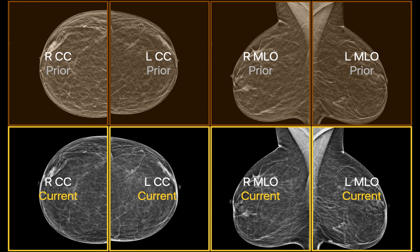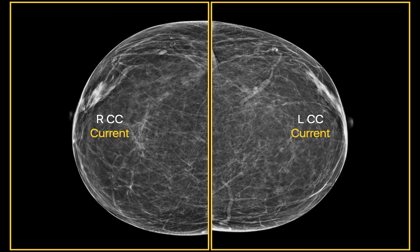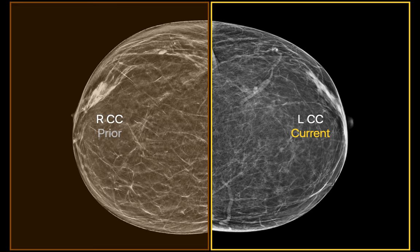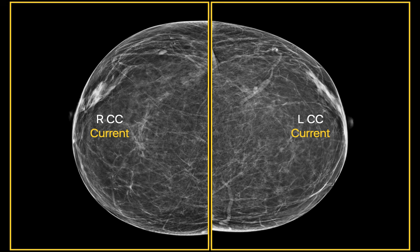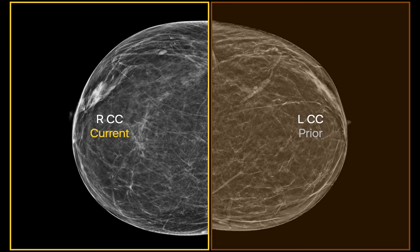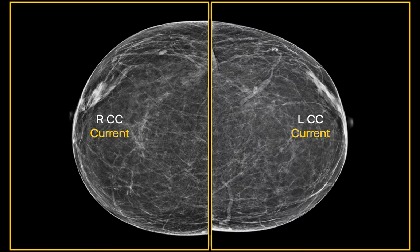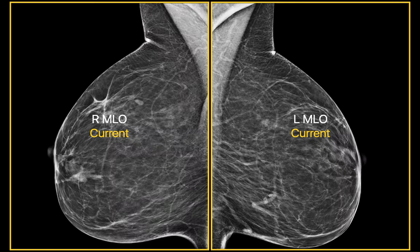Here's a different viewing protocol. In this protocol, a panorama of 8 2D mammography images are presented as before, and then the current CC views of both breasts may be displayed full size. The radiologist may then toggle back and forth between the current view and prior view of the right breast, and then toggle back and forth between the current and prior view of the left breast. The process is then repeated for the MLO views.